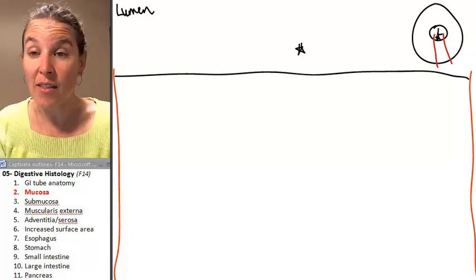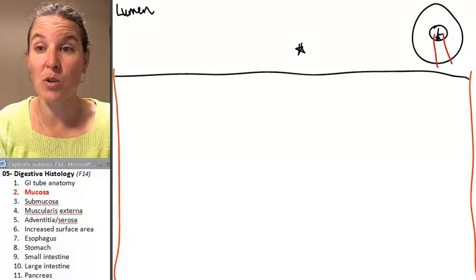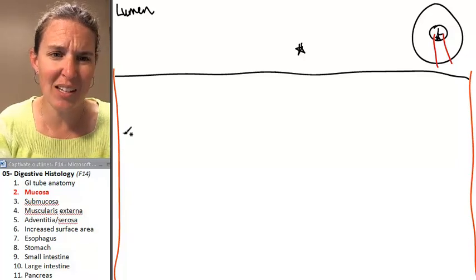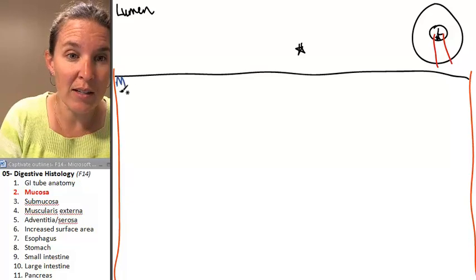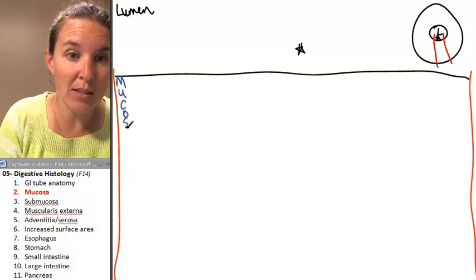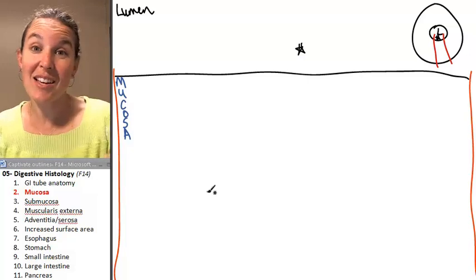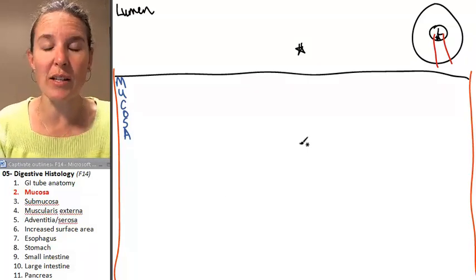The first layer that we have is called the mucosa. And in fact, the mucosa has several layers. So I'm going to draw it like this. Mucosa. So the mucosa is first, but I'm going to show you the different layers.